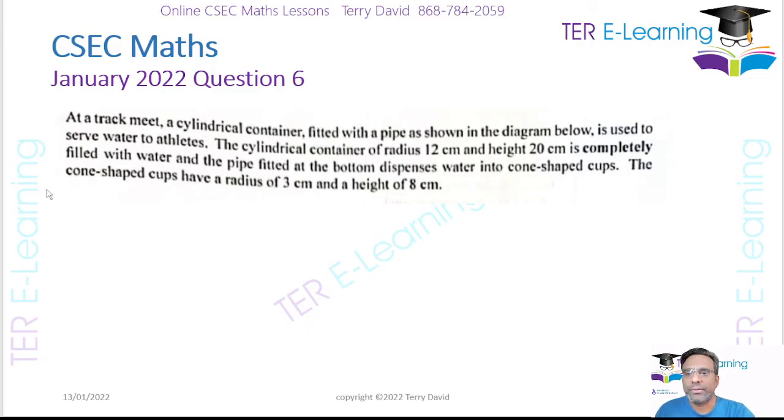In this question we have a track meet. A cylindrical container is fitted with a pipe as shown in the diagram and is used to serve water to the athletes. The cylindrical container of radius 12 cm and height 20 cm is completely filled with water and the pipe fitted at the bottom dispenses water into cone-shaped cups. The cone-shaped cups have a radius of 3 centimeters and a height of 8 centimeters.